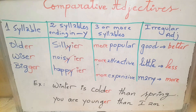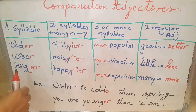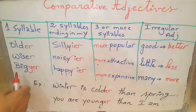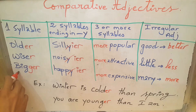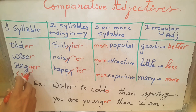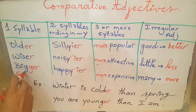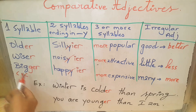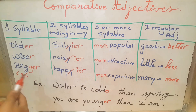Please pay attention here: if the adjective consists of consonant-vowel-consonant, you double the last consonant. Big becomes bigger, hot becomes hotter, fat becomes fatter.